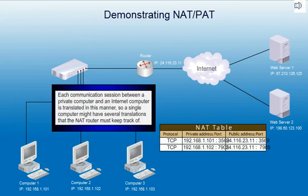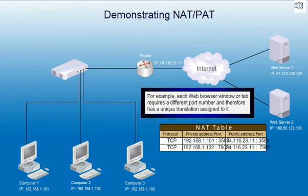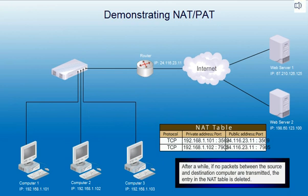Each communication session between a private computer and an Internet computer is translated in this manner, so a single computer might have several translations that the NAT router must keep track of. For example, each web browser window or tab requires a different port number and therefore has a unique translation assigned to it. After a while, if no packets between the source and destination computer are transmitted, the entry in the NAT table is deleted.